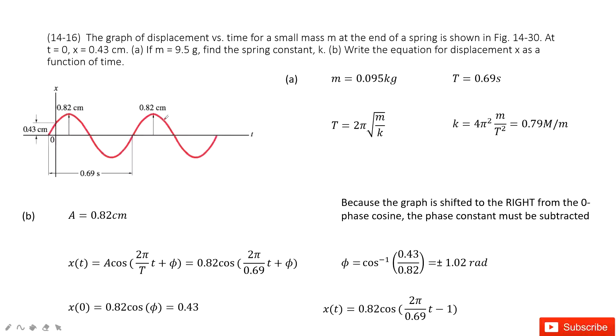So first let's see what quantities are given. It gives us the mass of this object, and it tells us that at t equals zero, the displacement is 0.43 centimeters. And also look at the picture.